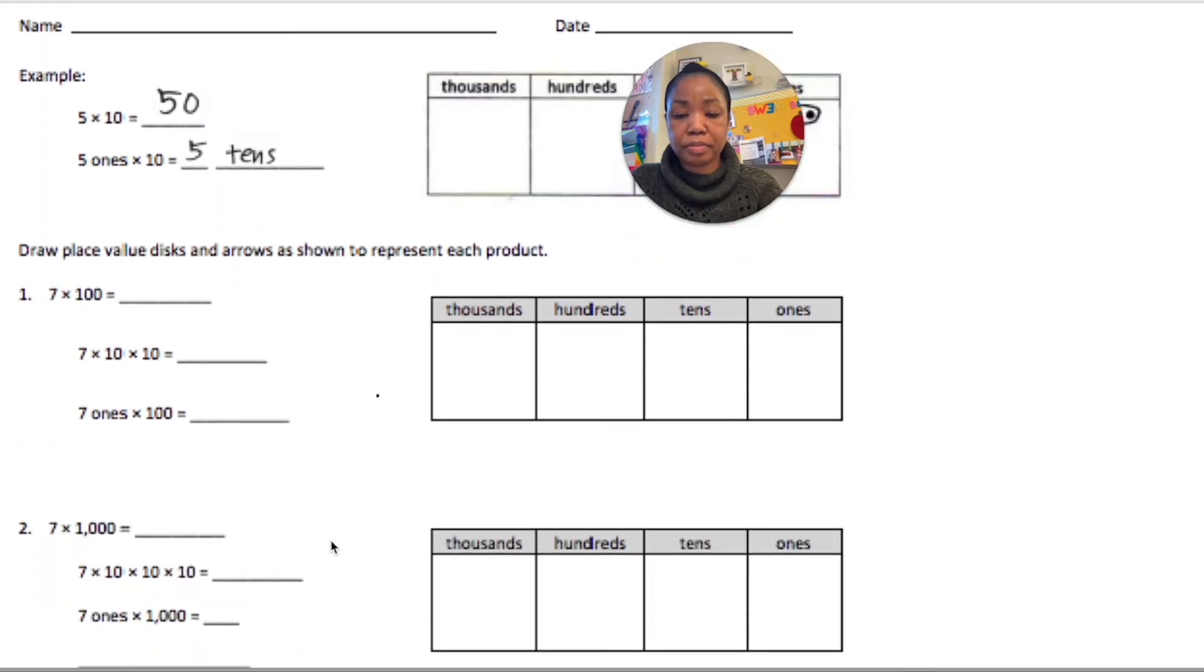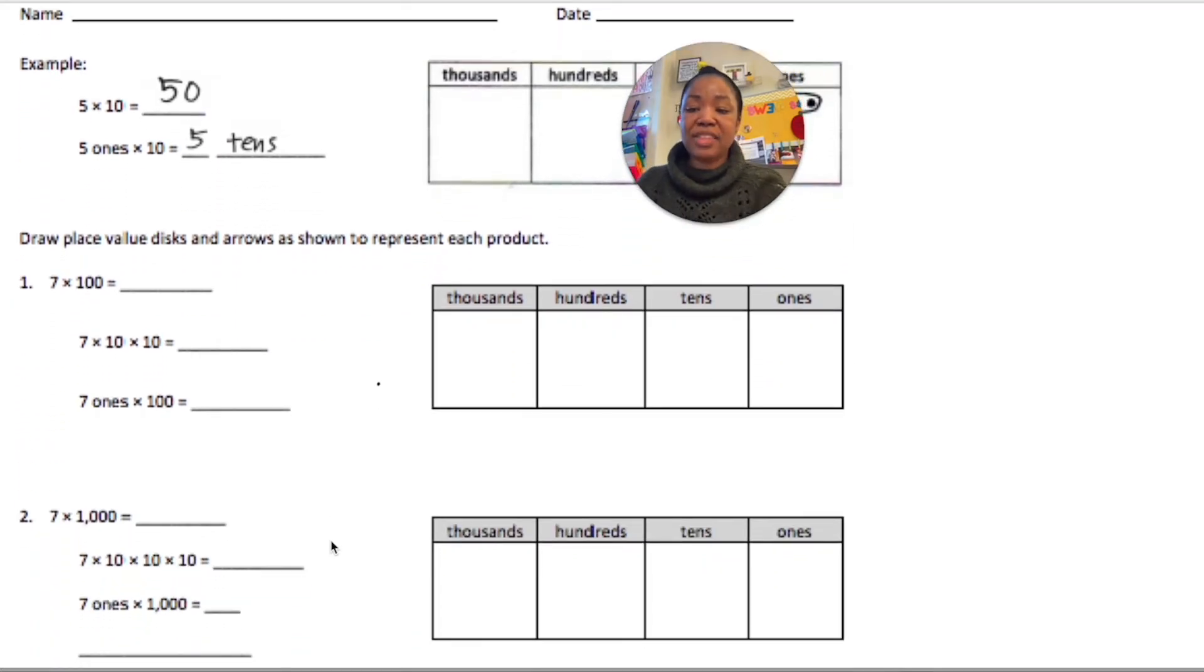So for number 1, we have 7 times 100. So I'm going to put 7 in the ones because that's 7 ones. 7 ones. I have one group of 7. Let's circle that. And they want us to multiply times 100 which is times 10 and times 10, right?